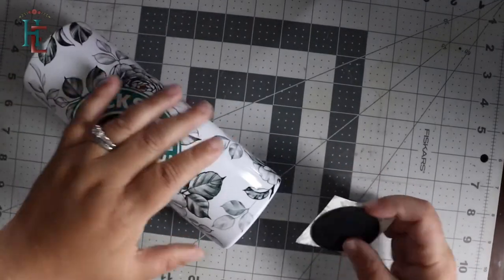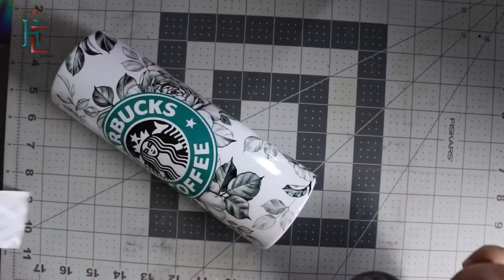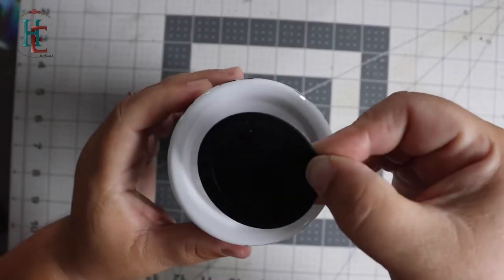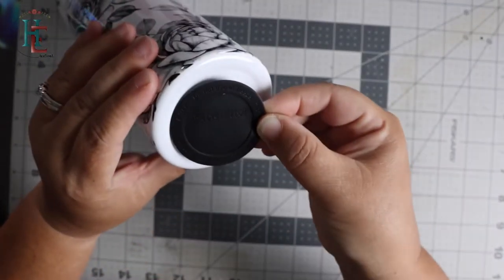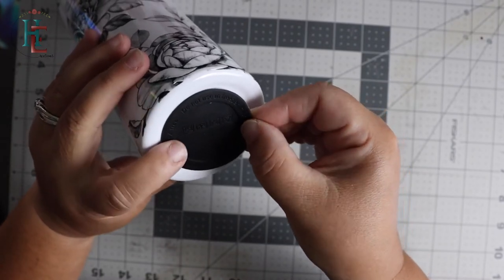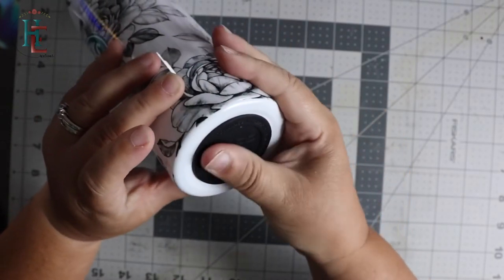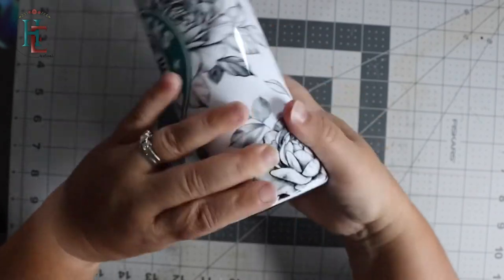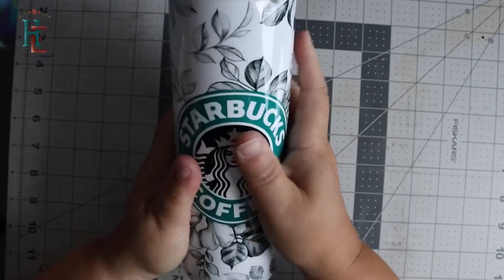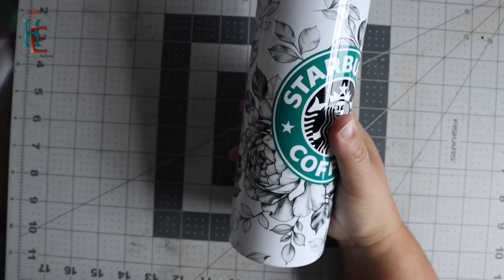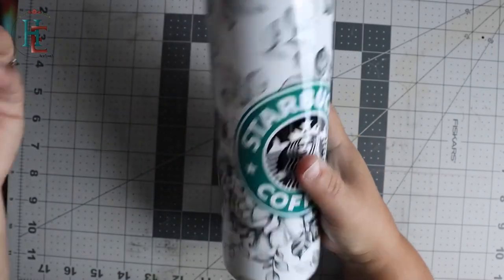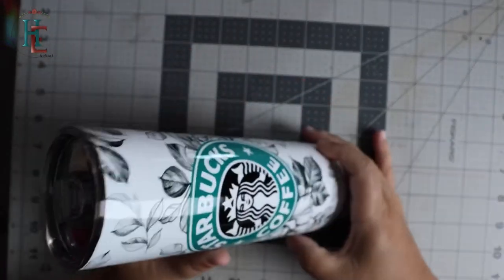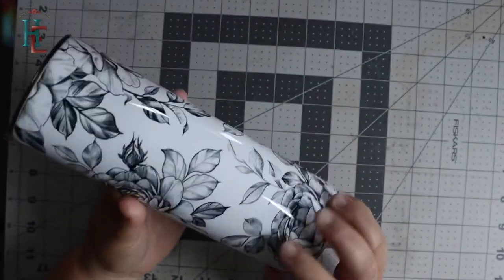My last thing that I do is I go ahead and I put my rubber bottom on. I'll cover up that little red spot or pink spot that was there. I love these things. If anybody's interested in those rubber bottoms, I actually got them off of Etsy. If I can remember, I'll put a link in the description box. These things are awesome.